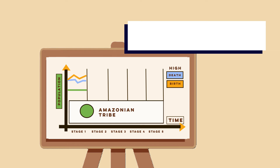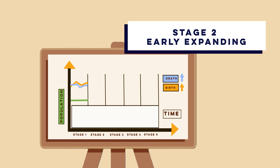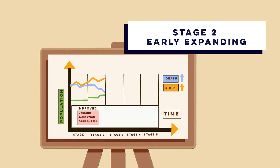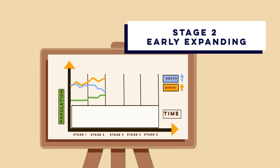Stage 2 is early expanding. Death rates rapidly decline due to improved medicine, sanitation and food supply, but birth rates remain high, leading to rapid population growth. This happens because better healthcare reduces infant mortality, encouraging people to have larger families. Many low income countries such as Afghanistan or other parts of sub-Saharan Africa are at this stage.